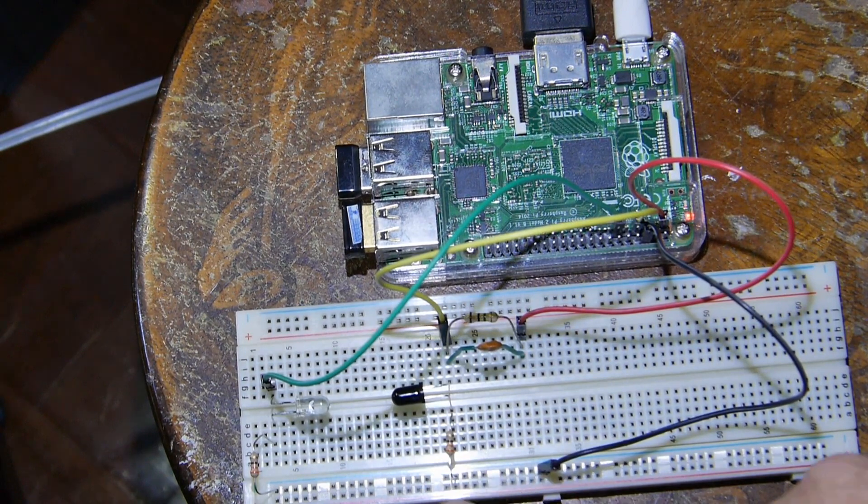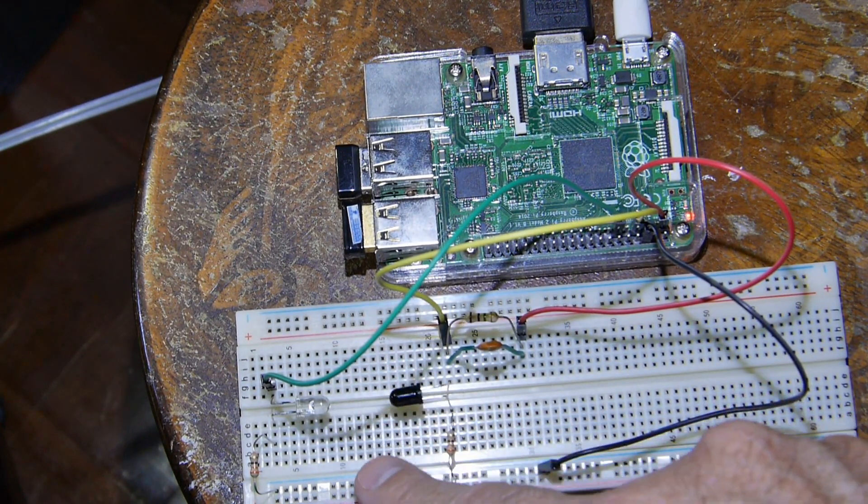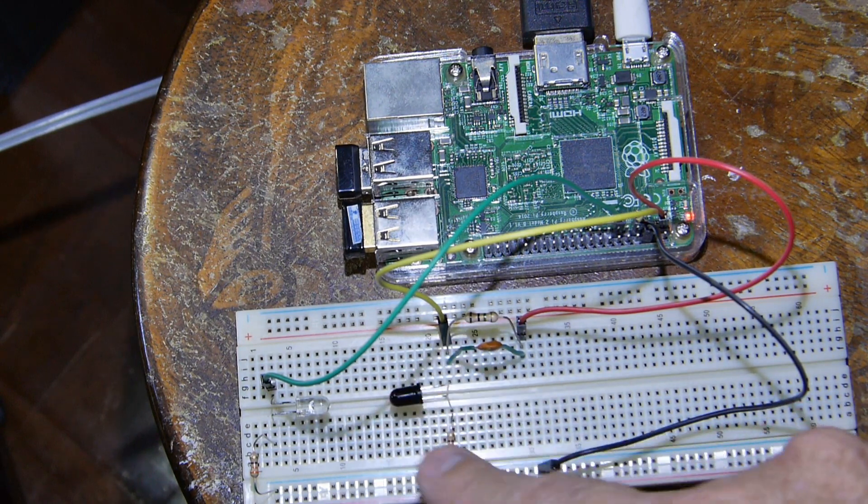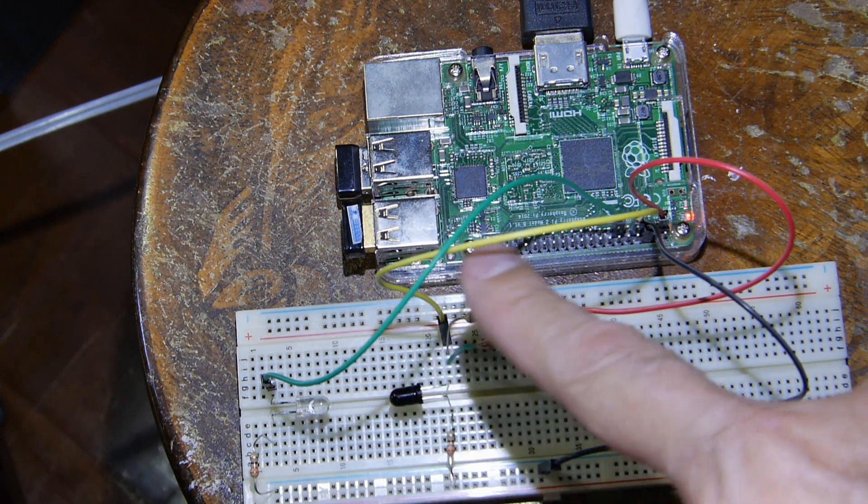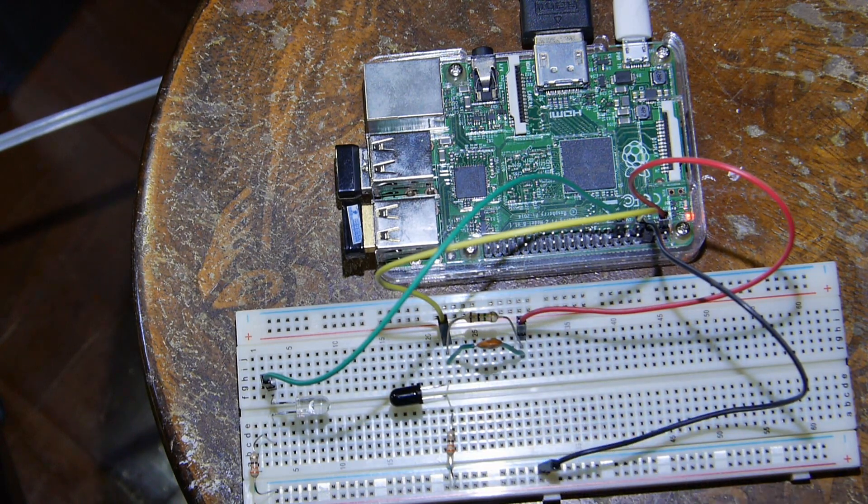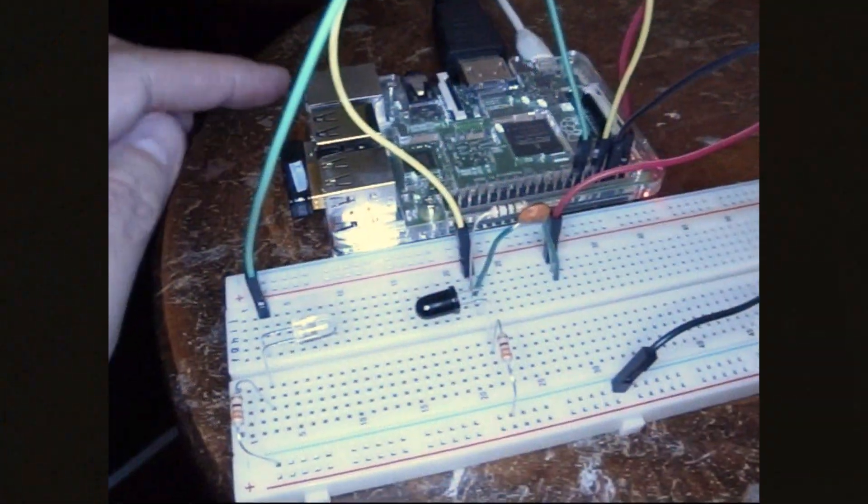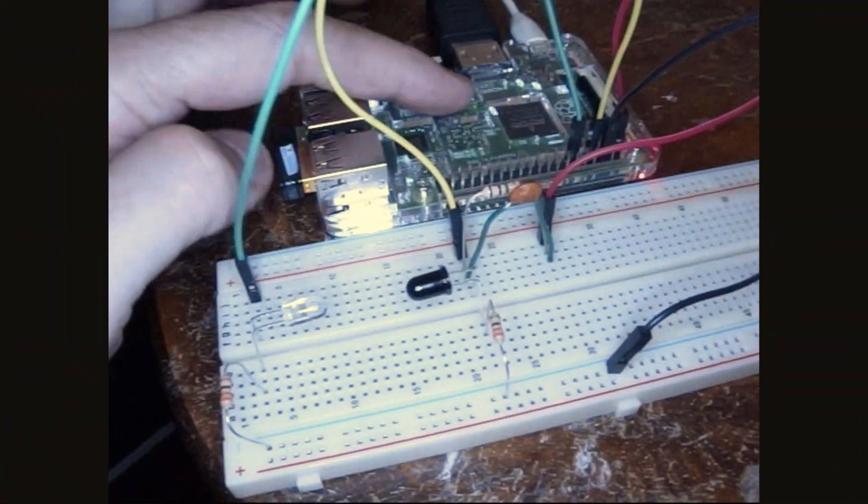Today we're going to do a variation on the last experiment on how to do inputs for the Raspberry Pi. It's pretty much the same board setup with a slight change, but I'll show you that in a bit. We're going to do some software changes, and that's what's going to be the interesting part for today. The setup is very similar to my last experiment.